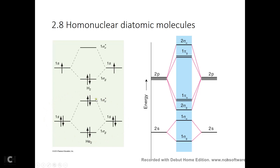Chemists do not care about core electrons — we care about the valence electrons. In lithium-2, we have only two valence electrons. In boron-2, we put two more electrons in the pi orbitals, so there's a single bond. In carbon-2, we put two electrons here and two electrons here, giving us a total of four bonding electrons for a bond order of two. In nitrogen-2, we have six valence electrons — the bond order is three.